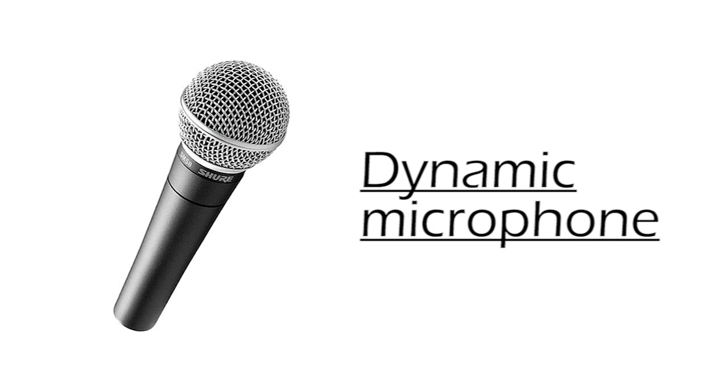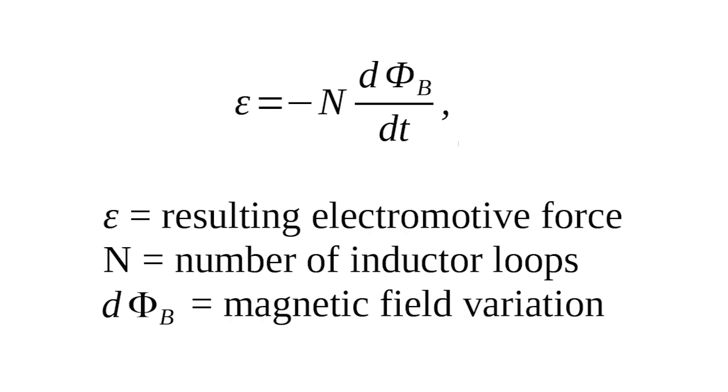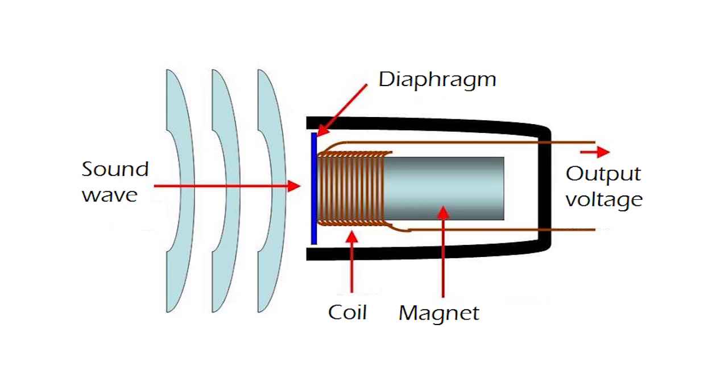The dynamic microphone will not be hard to understand, since the components that make it up are exactly the same as those that make up a dynamic speaker, only in the opposite order. Sound waves impact the diaphragm, transmitting the movement to a coil. A magnet passes through the center of the inductor, and the inductor's movement causes it to perceive the magnet's magnetic field as a varying magnetic field. This generates an electromotive force described by the Maxwell-Faraday equation, that is, a voltage. Finally, the signal is the voltage measured in the terminals.